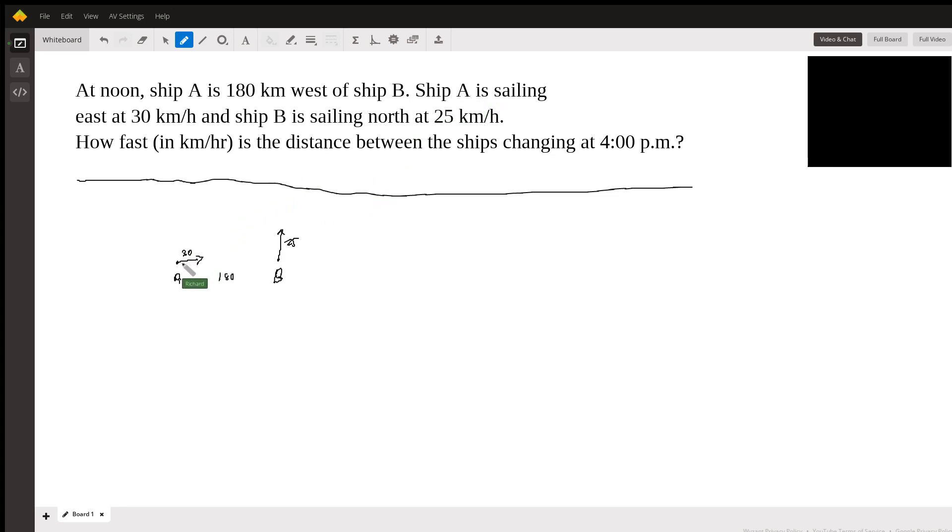So we have ship A that's west of ship B, and at noon the initial positions are here and here.